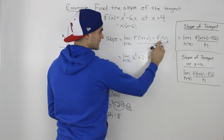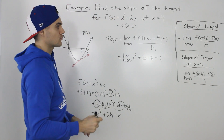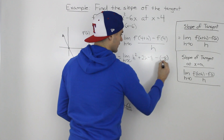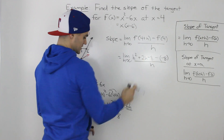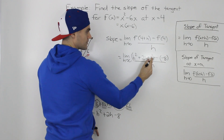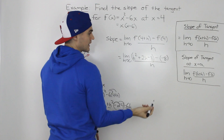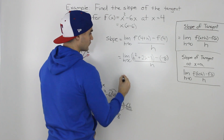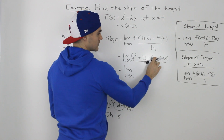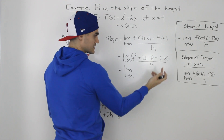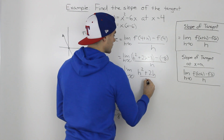We also need to subtract f(4). Plugging 4 into the function: 4² - 6(4) = 16 - 24 = -8. So f(4) = -8. Substituting into our limit: we have [h² + 2h - 8] - (-8), all over h. The -8 and +8 cancel, leaving (h² + 2h) / h.